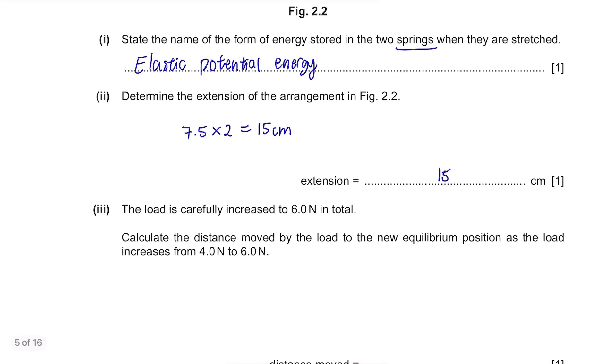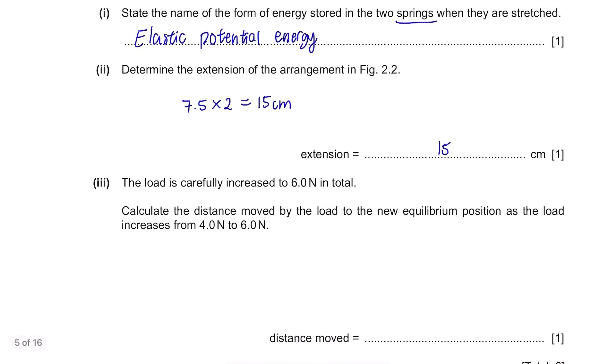The load is carefully increased to 6 N in total. Calculate the distance moved by the load to the new equilibrium position as the load increases from 4 N to 6 N. We don't need to look at the graph for this. Remember that extension is proportional. The load increased from 4 N to 6 N, so 2 N, and we need to find how much it moved by this change. If 4 N make the extension of 15 cm, then for 2 N, there will be half the extension of 4 N, so 7.5 is the answer.